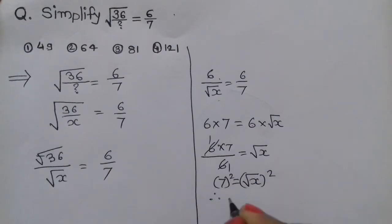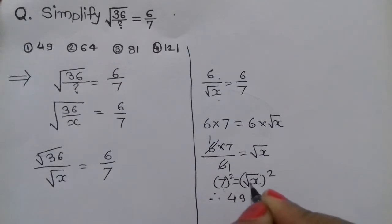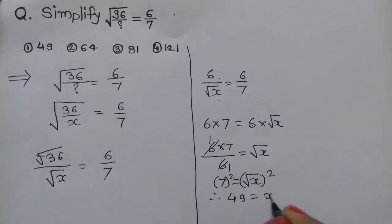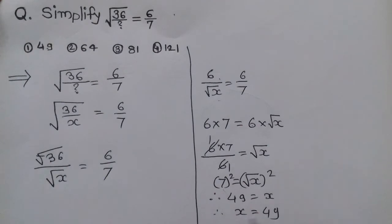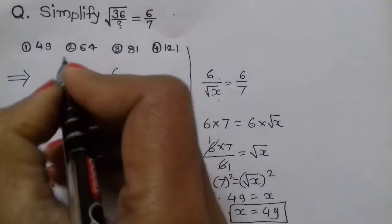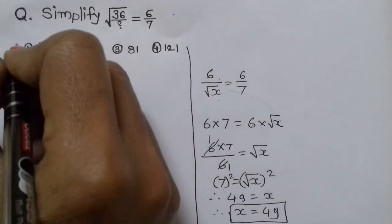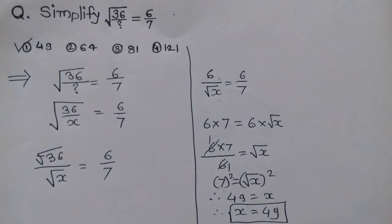7 squared is 49, which equals x. Therefore x = 49, so the answer is option 1: 49.